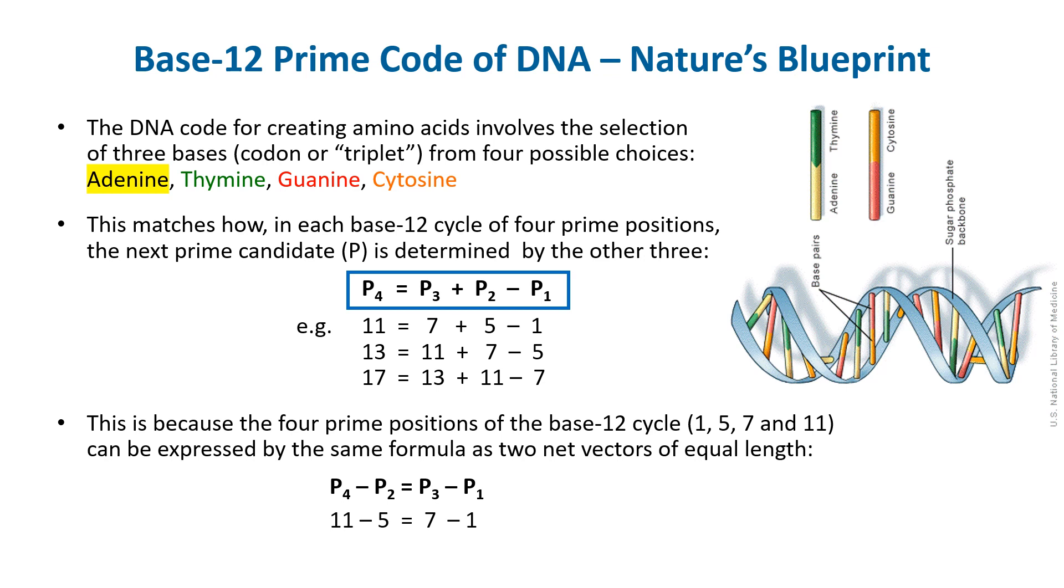Again, this relationship holds because the four prime positions of the base-12 cycle, 1, 5, 7, and 11, can be expressed as two net vectors of equal length, 11 minus 5 and 7 minus 1, which we see as the same formula above, just with the terms reordered. In practical terms, a smaller prime position is always paired with its larger counterpart on the opposite side of the base-12 circle, six positions away.